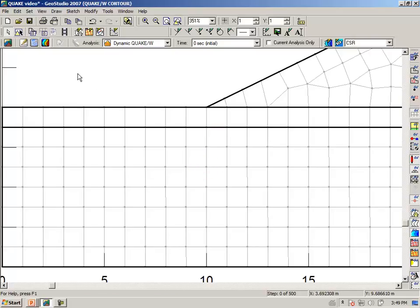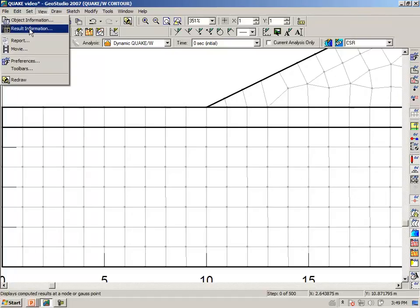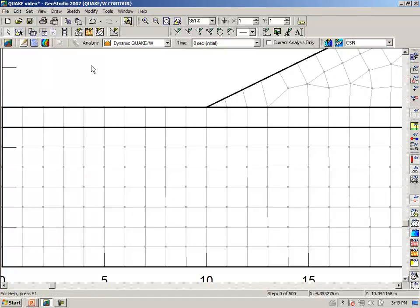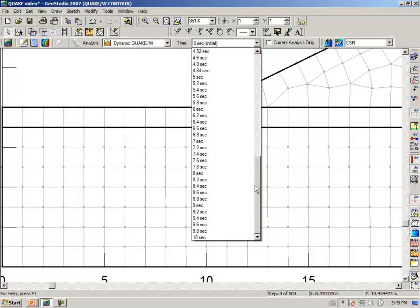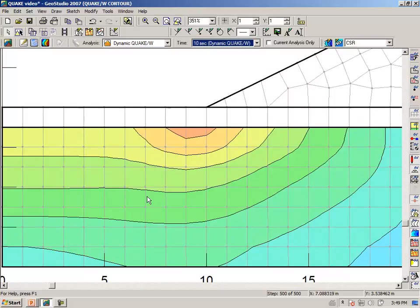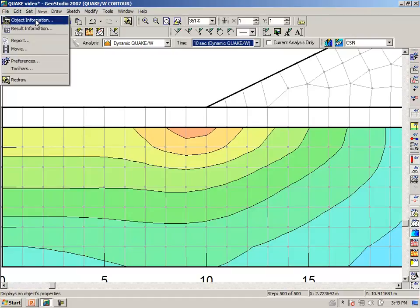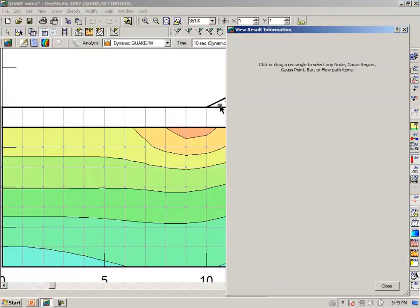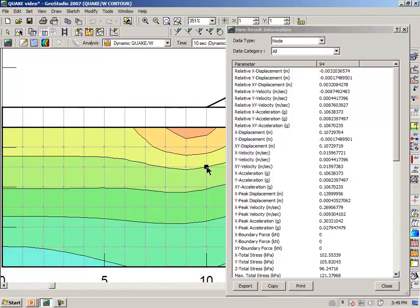Let us go to the final saved result, the 10 second result. If we say View Result Information and we look at this node at this location immediately below the upstream toe, we get all of this information here.